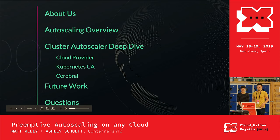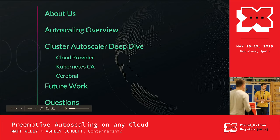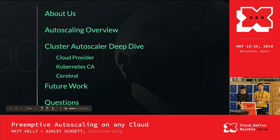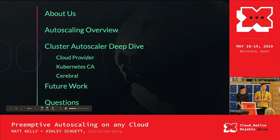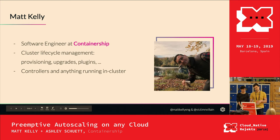So a quick outline: first we're going to talk a little bit about us, and then we'll give an overview of autoscaling in general. Then we'll talk about cluster autoscaling, do a deep dive, talk about cloud provider autoscalers, the Kubernetes cluster autoscaler — which is the core ecosystem project — and then we'll talk about Cerebral, a cluster autoscaler we built at Containership. Then we'll cover future work and take questions.